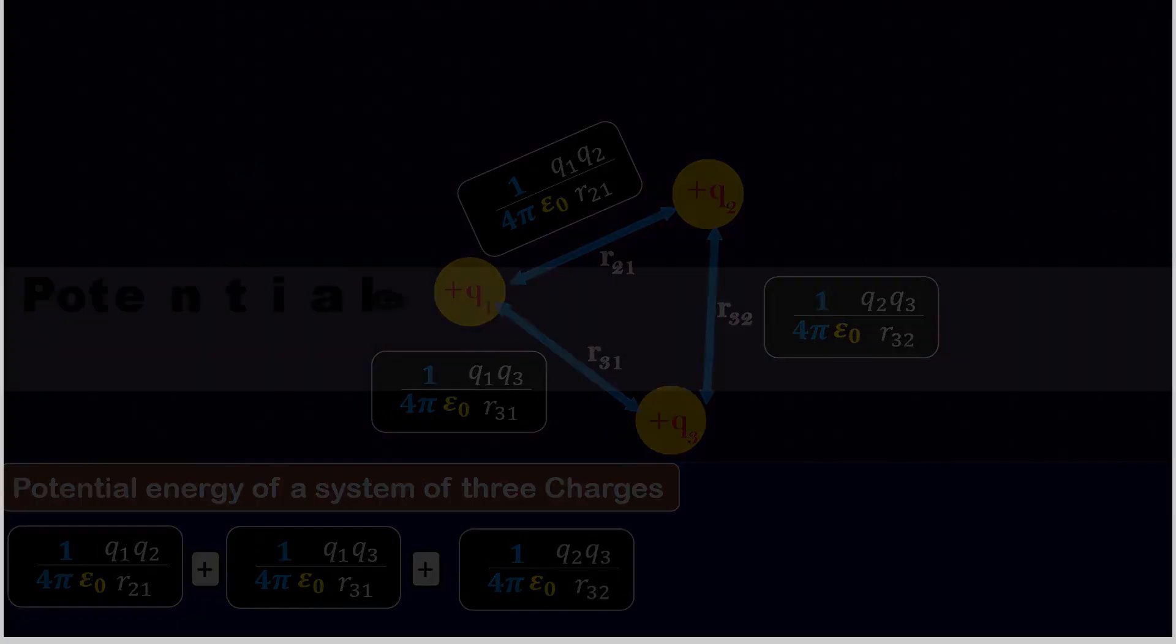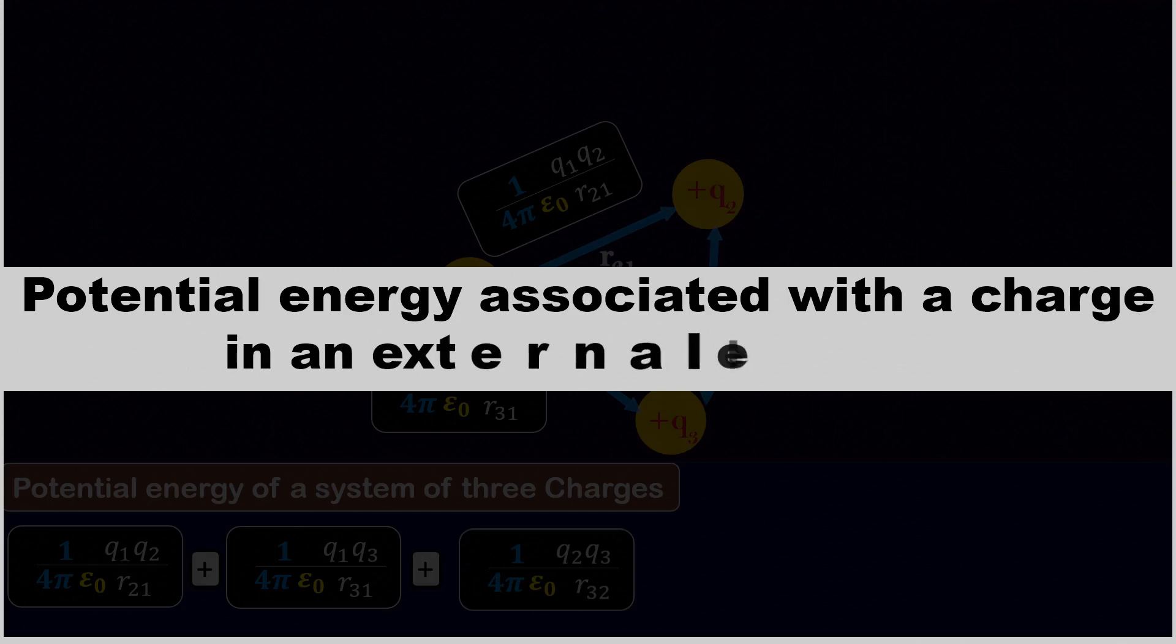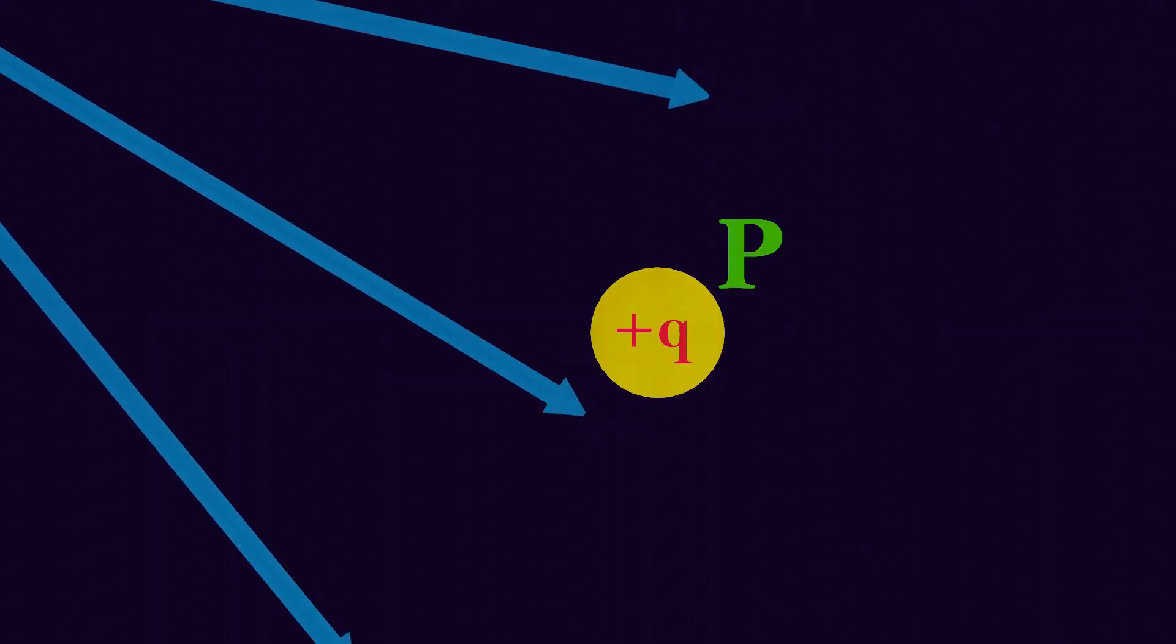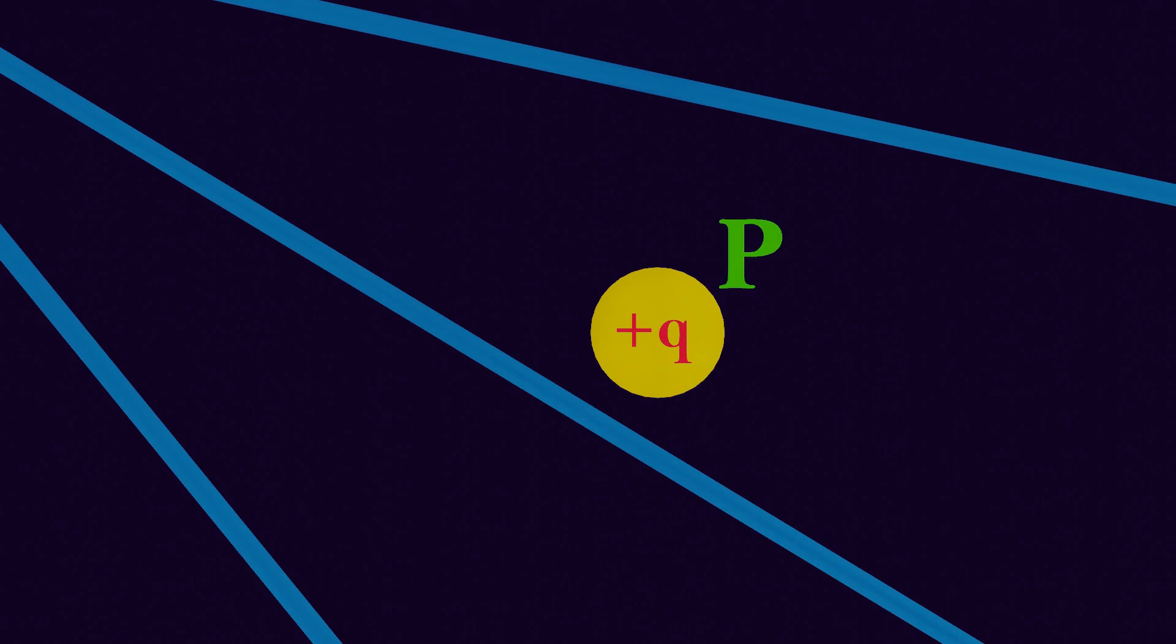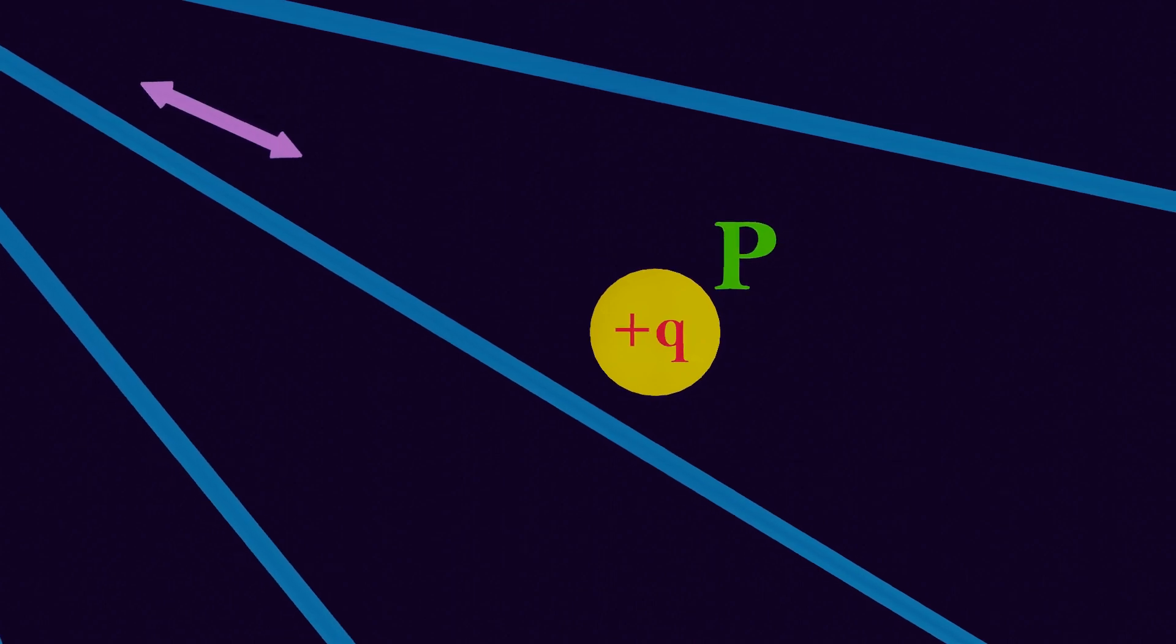Now let's discuss the potential energy associated with a charge in an external electric field. Suppose there is a unit charge q at point P, placed in an external electric field. To understand how much potential energy this charge holds in the external electric field, we first need to remember that if there is an electric field anywhere, it must have a source charge.